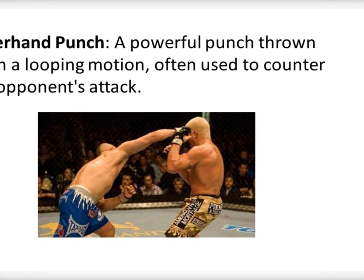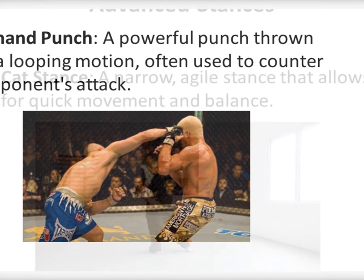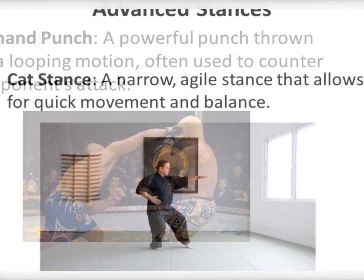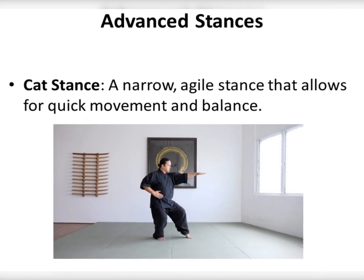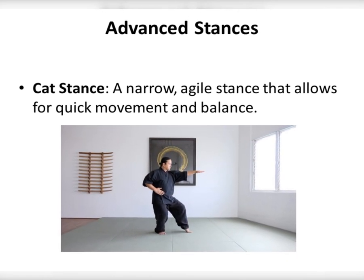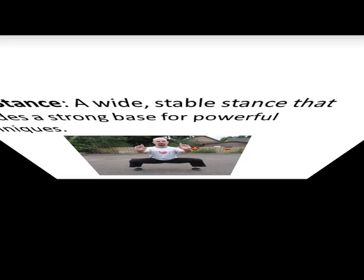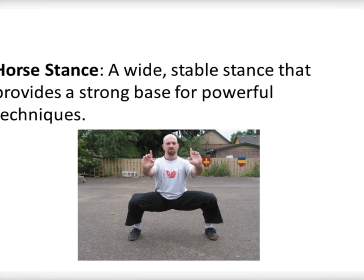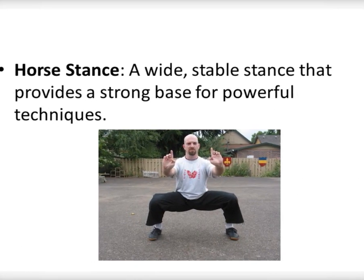Advanced Stances. Cat Stance: A narrow, agile stance that allows for quick movement and balance. Horse Stance: A wide, stable stance that provides a strong base for powerful techniques.